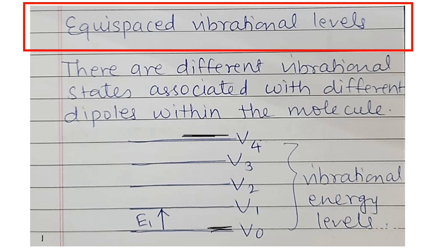For any particular molecule to move from V0 to V1, it has to absorb a certain amount of energy. All these vibrational energy levels are equispaced — the distance between them is constant. There are different vibrational states associated with different dipoles within the molecule: CH is one dipole, OH is another dipole, C–C is another dipole. For each dipole, such equispaced vibrational energy levels are available.